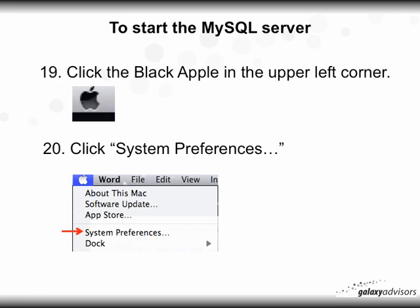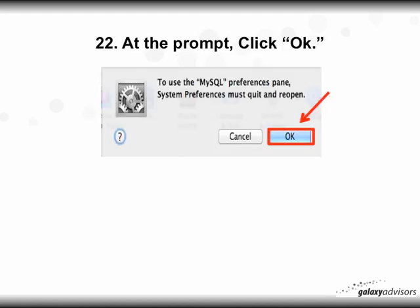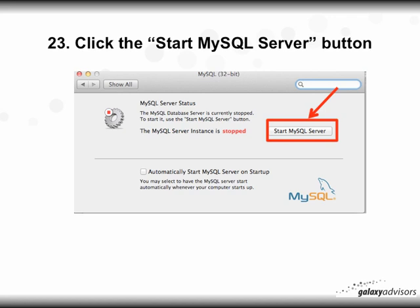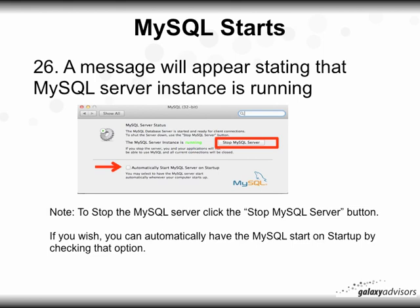Next, how do you start the MySQL server? Regardless of what version you've downloaded and installed, in step 19 click the black Apple in the upper left corner and click on System Preferences. Under 'Other' or somewhere in System Preferences, you'll see the MySQL icon — double-click on it. You'll get a prompt saying to use the MySQL Preference Pane system, you must quit and reopen. Click OK. Then in step 23, click the Start MySQL Server button. It will show red for Stop; once you click it, it turns green. Enter your computer's password and click OK. A message will appear stating the MySQL Server instance is running, shown in green. To stop MySQL, click Stop MySQL Server. To have MySQL start automatically on startup, check that checkbox.